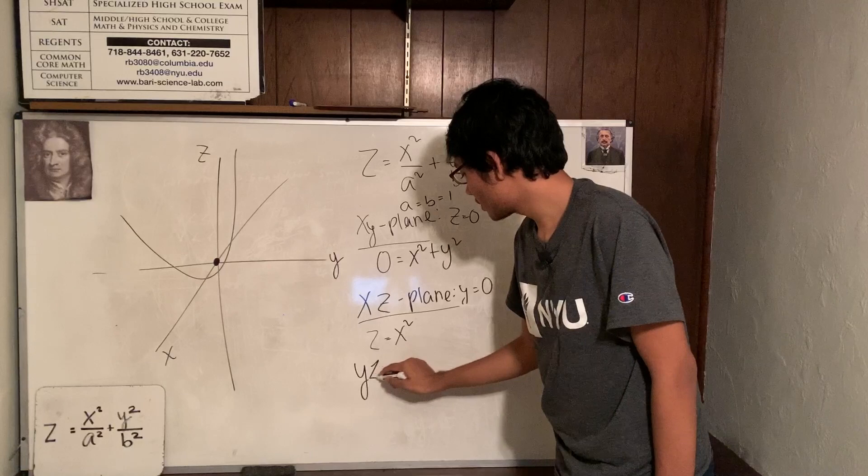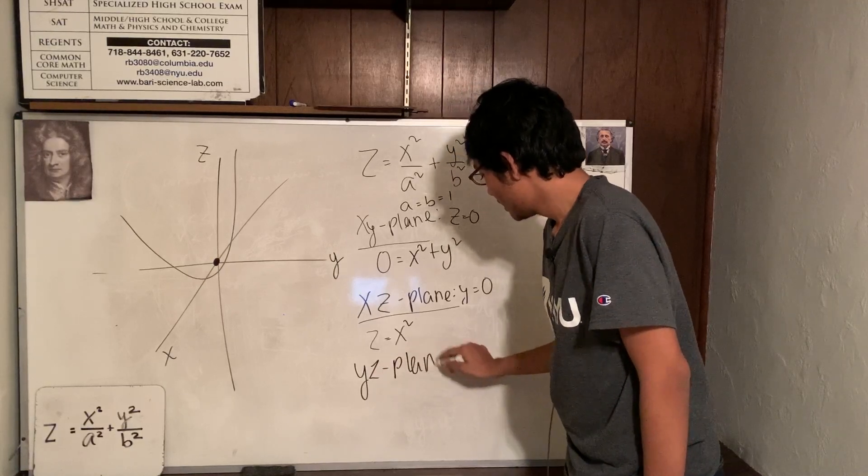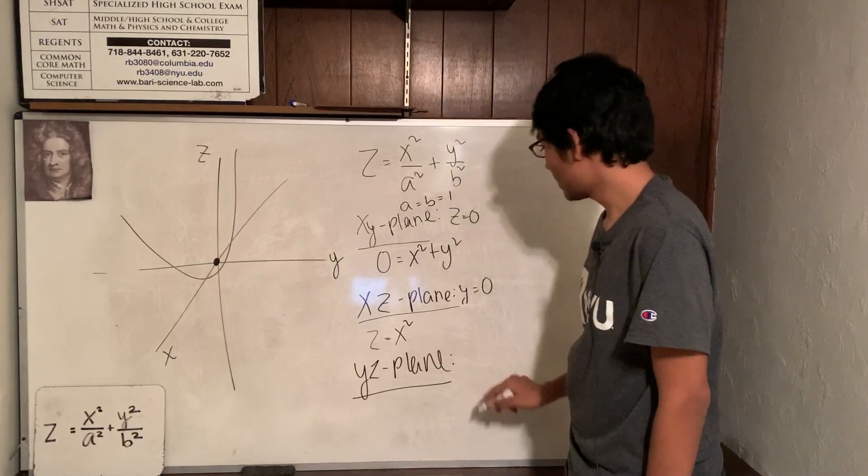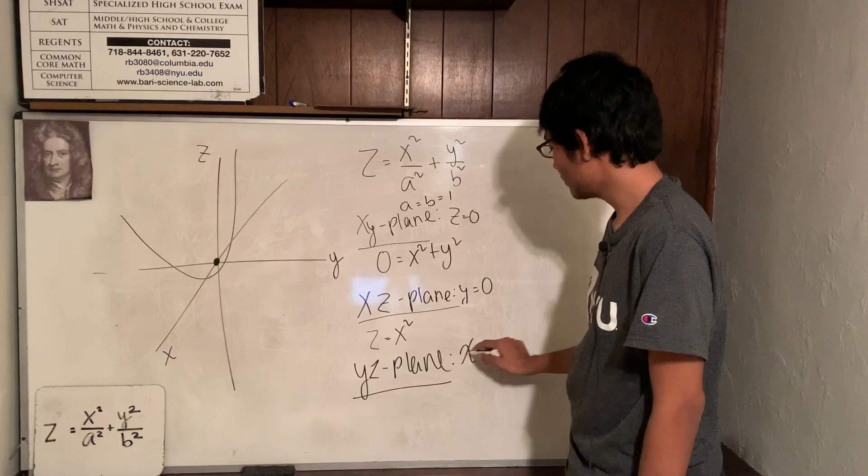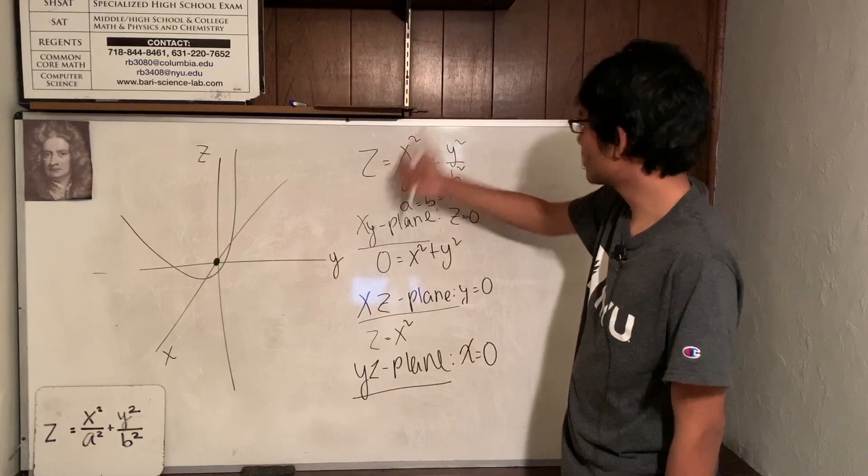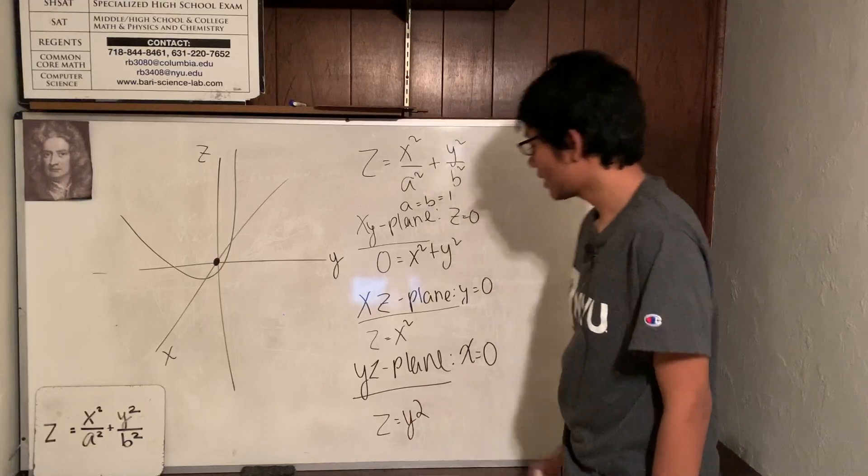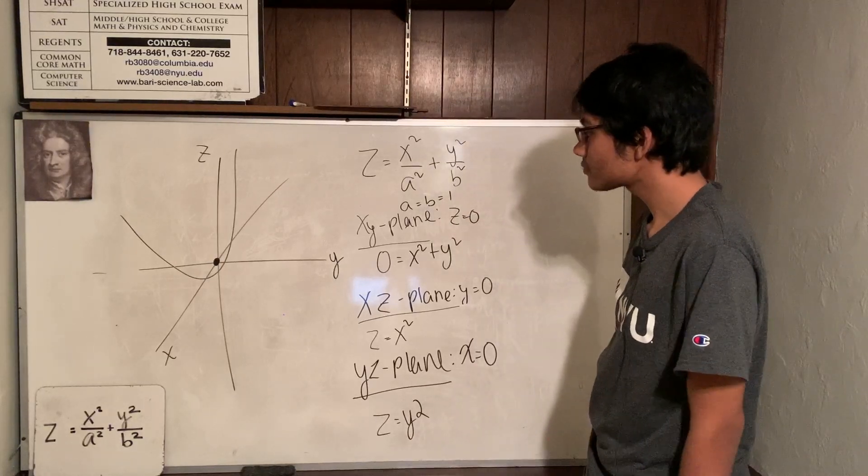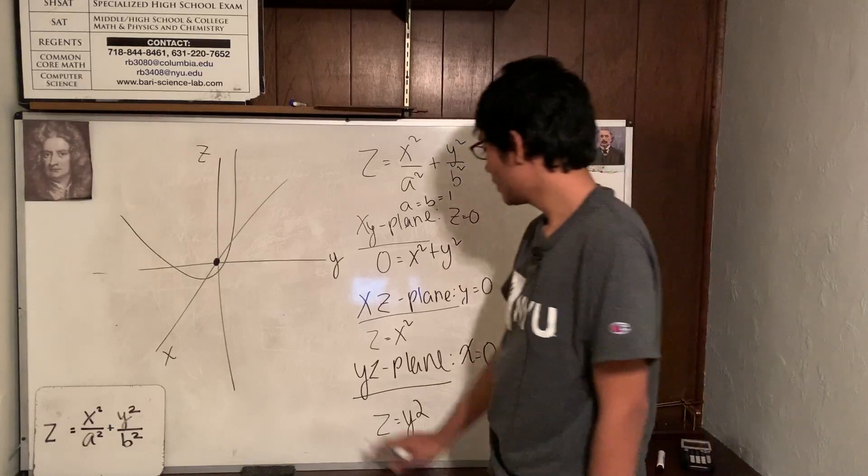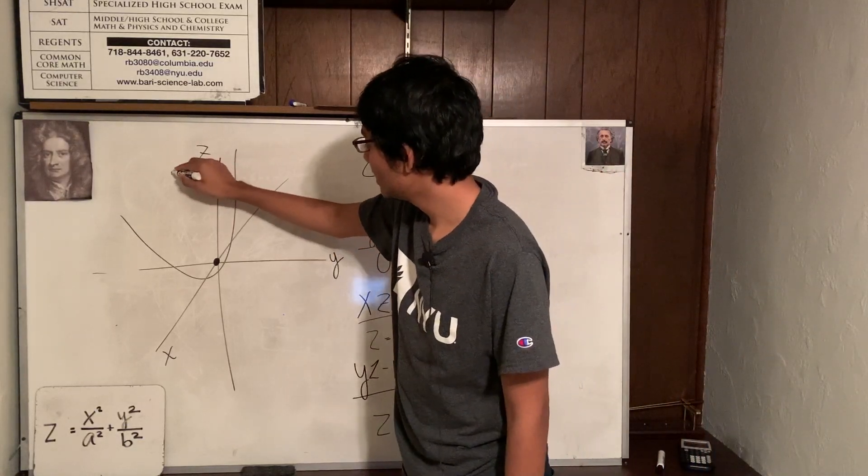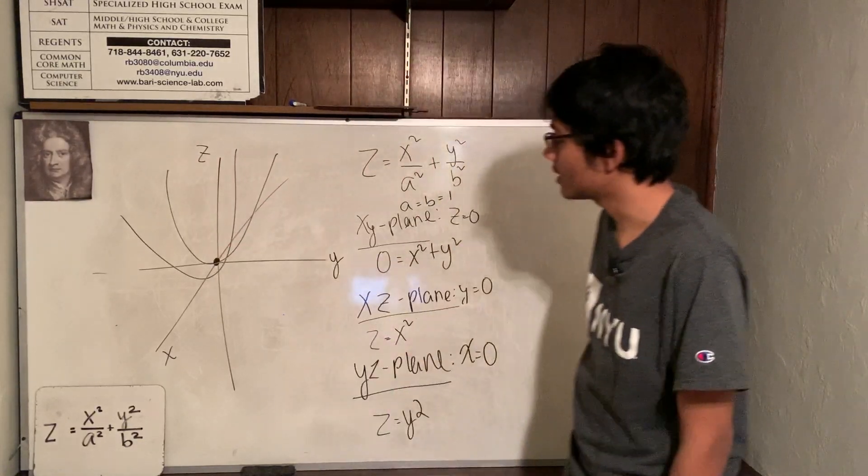Finally, come over to the yz plane. To find the cross section there, I'm just going to fix the x variable, set it to zero, take this term, pop it out. I'm left with z equals y squared. What is that? z equals y squared. We'll come over to the yz plane and you can draw another parabola like this.